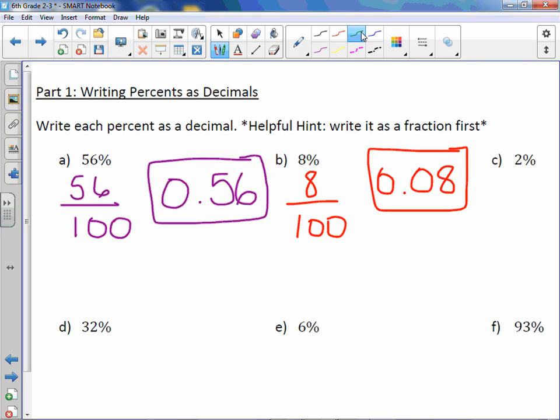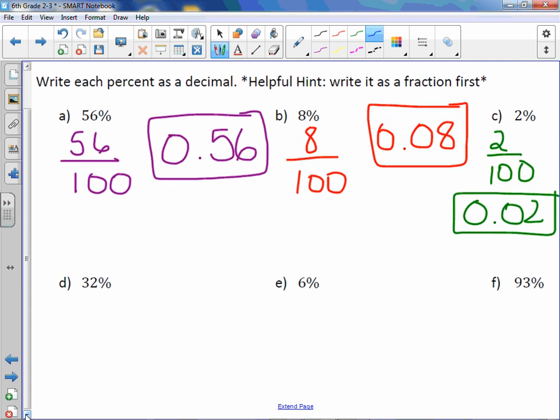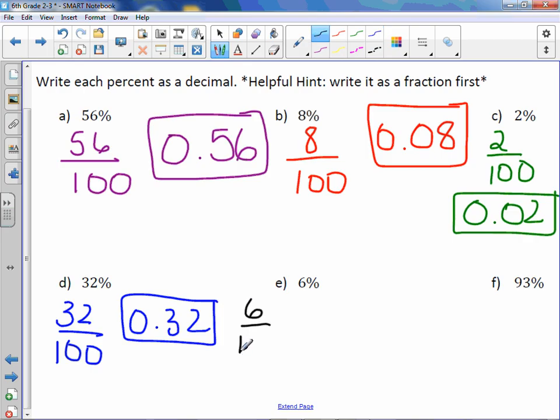Letter C: 2% would be 2 over 100 or 2 hundredths - 2 in the hundredths place. Letter D is 32%, which is 32 over 100 or 32 hundredths. Letter E is 6% or 6 over 100 - 6 hundredths, which means 6 in the hundredths place.